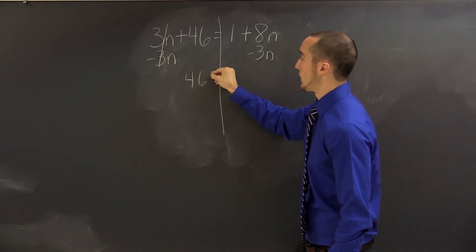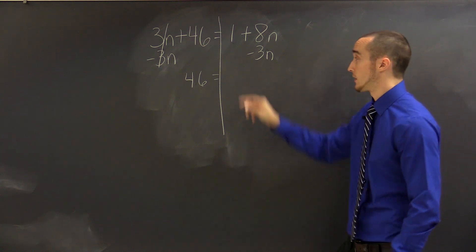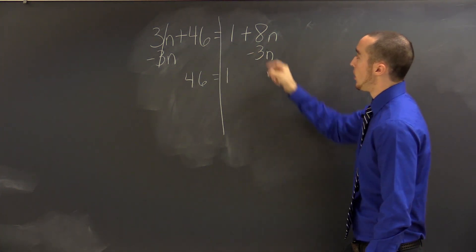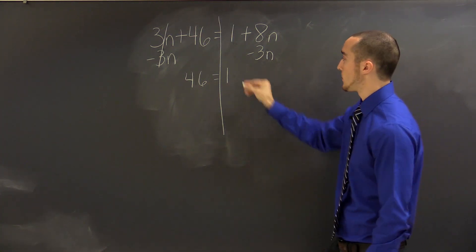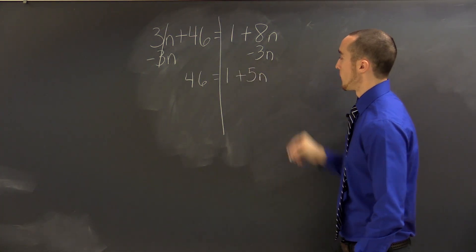And I have 46 by itself. On the right-hand side, nothing has happened to the 1, but we do have 8n subtract 3n. That's a positive 5n.